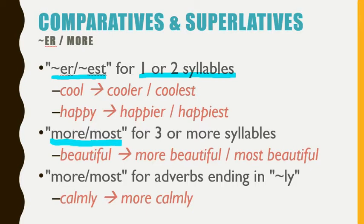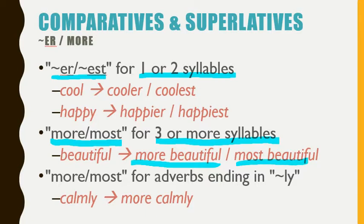You should use more and most if you have three or more syllables in your word. If you have a word like beautiful — that's three syllables — and if you added another syllable you'd have beautifuler, beautifulest, which would be too long and uncomfortable to say. That's why we say more beautiful and most beautiful instead.